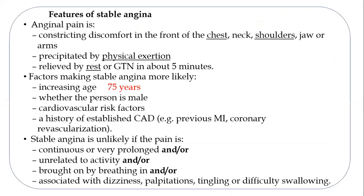In the case described, the patient has constricting discomfort in the chest and shoulders, precipitated by physical exertion and relieved by rest — so it is atypical angina. There are factors that make stable angina more likely, such as increasing age (in that patient it was 75 years), male sex, presence of cardiovascular risk factors, and history of established coronary artery disease.